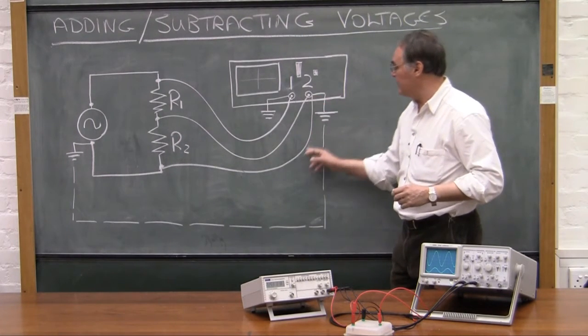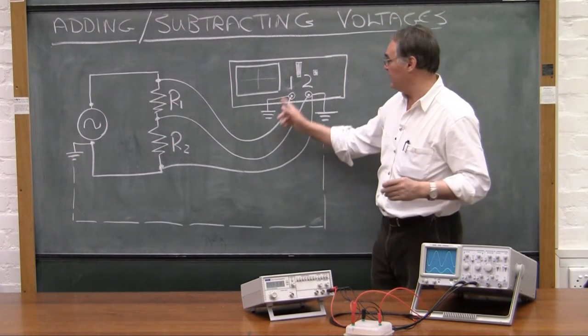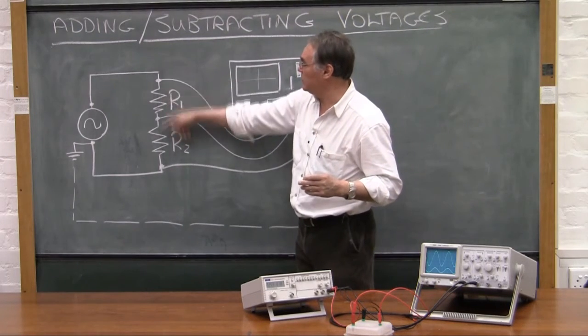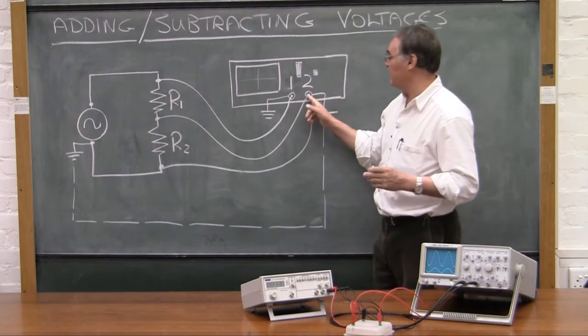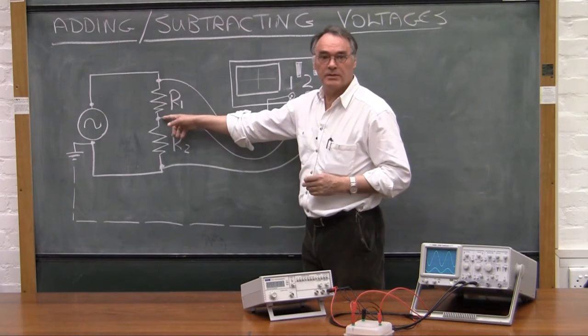I'll connect up this black wire and then I'll connect the red wire from channel 1 which is the input to channel 1 to the top of the two resistors and I'll connect the red wire from channel 2 to this point between the two resistors.